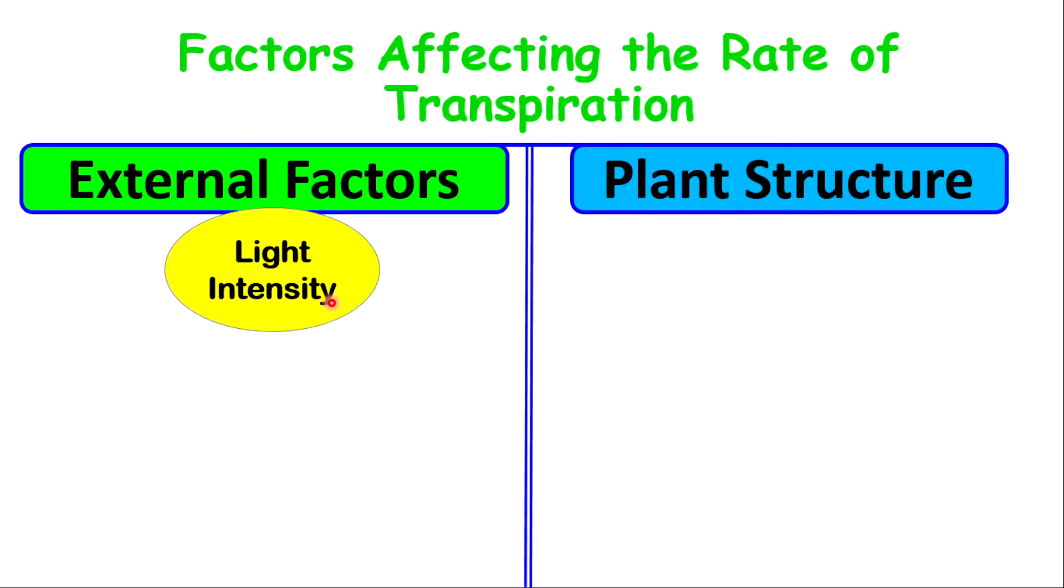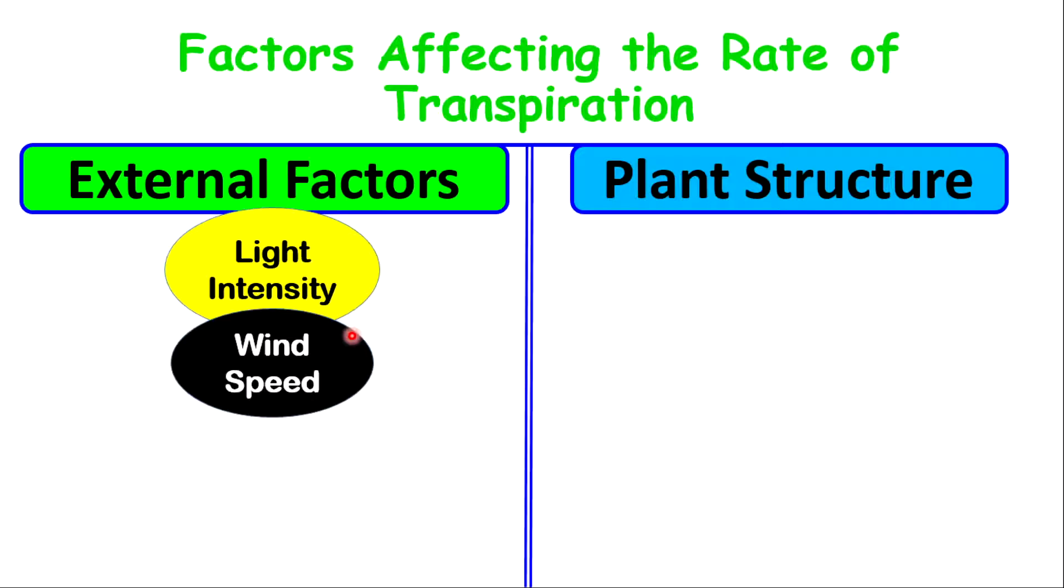We have light intensity. As the amount of light increases, then the stomata become open or even wider, hence a greater chance for water to be evaporated, resulting in more water loss. The other is wind speed. As the speed of wind increases, then it may lead to more diffusion, hence more movement of water towards the outside of the plant, resulting in more water loss.